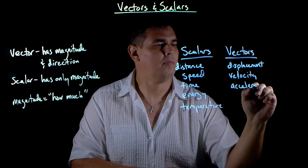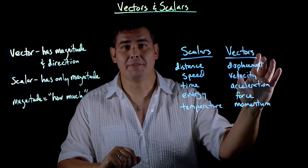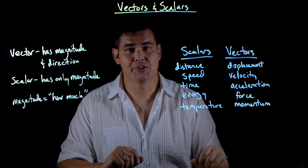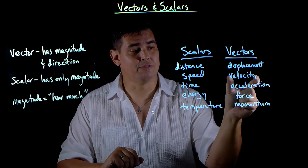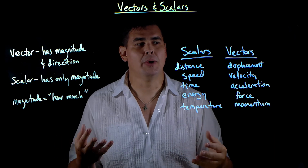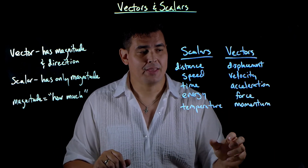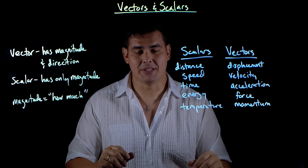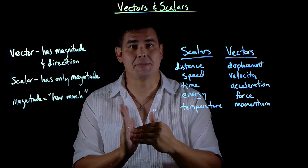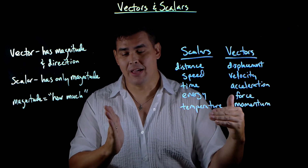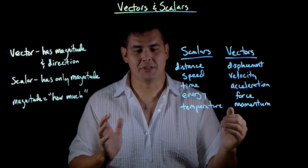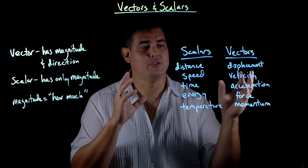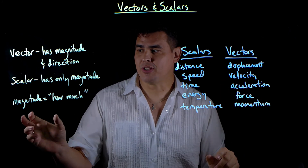Vectors include displacement, velocity, acceleration, force, and momentum. Acceleration is the rate of change of velocity, so it has a direction. Force is a vector because it involves acceleration — which way you apply a force makes a difference. Momentum is a vector too, because the direction really matters. For example, an object that hits a wall and stops is different from one that bounces off — there's a different change in momentum based on those two outcomes. Vectors have direction; scalars just have a magnitude.